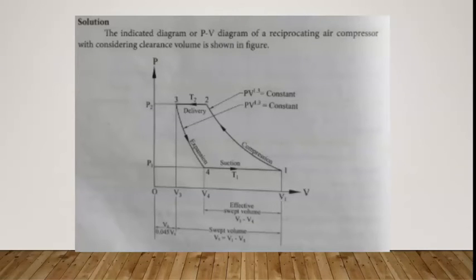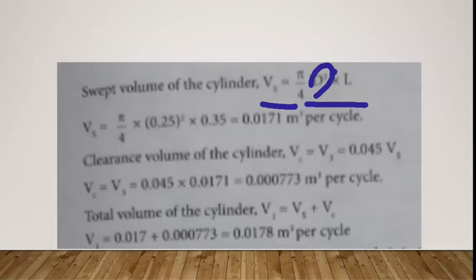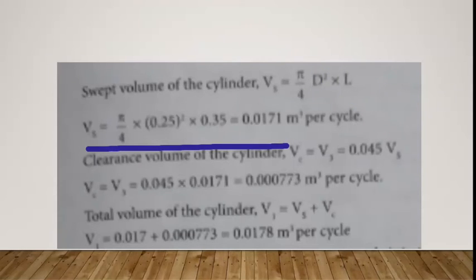This is the indicator diagram and the P-V diagram. In the case of the air compressor, the clearance volume will be considered. The compression and expansion index is 1.3. The swept volume Vs is calculated using the diameter and length of stroke: Vs equals π/4 × D² × L, giving a value of 0.0171 meter cube.